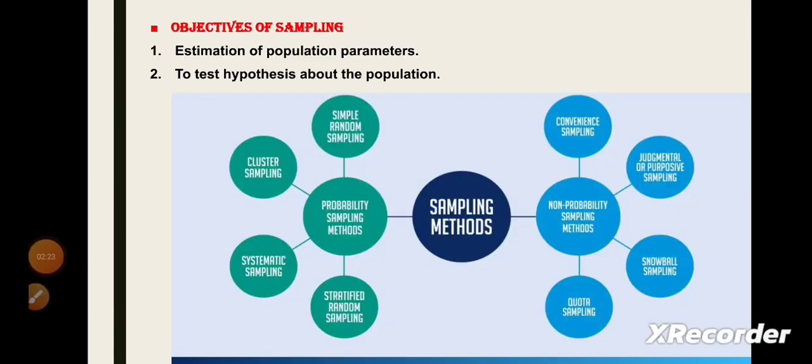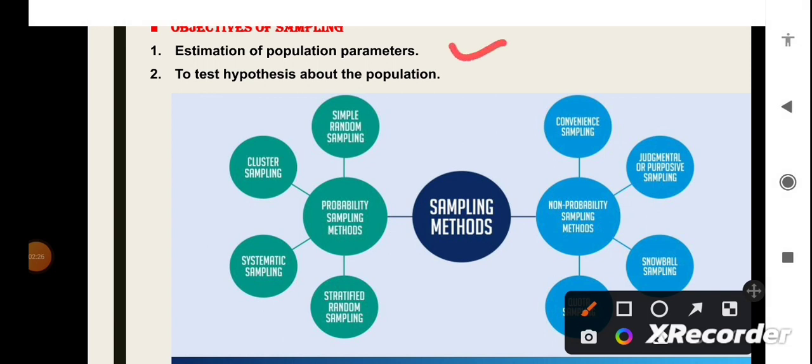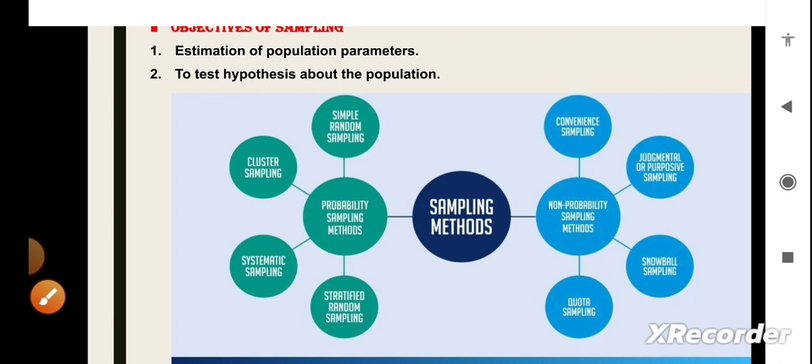There are two objectives of sampling. First is the estimation of population parameter and second is to test the hypothesis which is about the population only. On these two objectives, there are different types of sampling methods. First one is probability sampling method which includes simple random sampling, cluster sampling, systematic sampling and the stratified random sampling. Whereas, second one is non-probability sampling methods which are the convenience sampling, judgmental or purposive sampling, snowball sampling and the quota sampling.